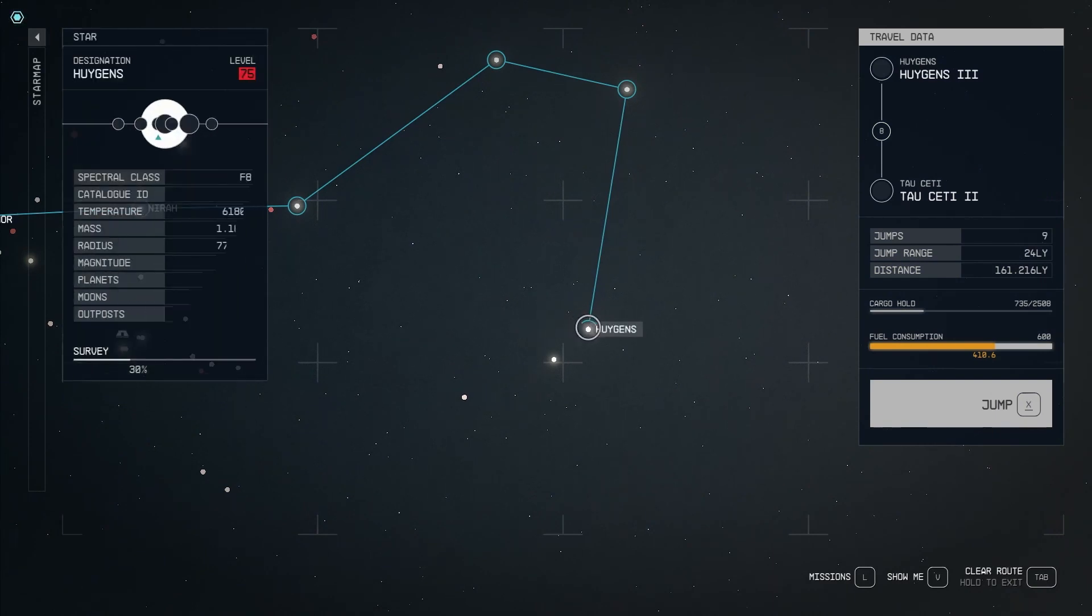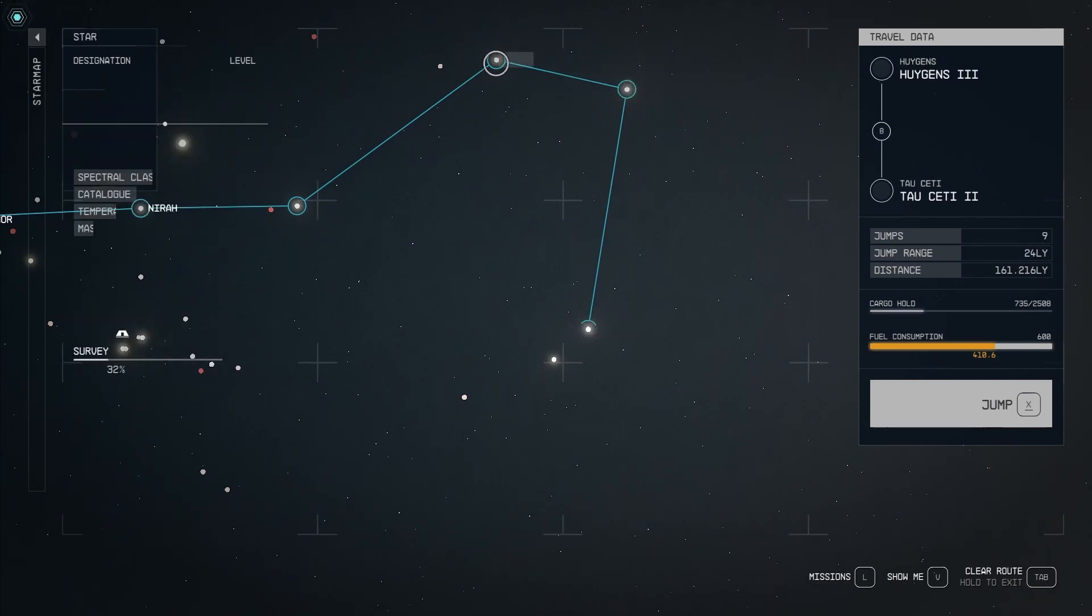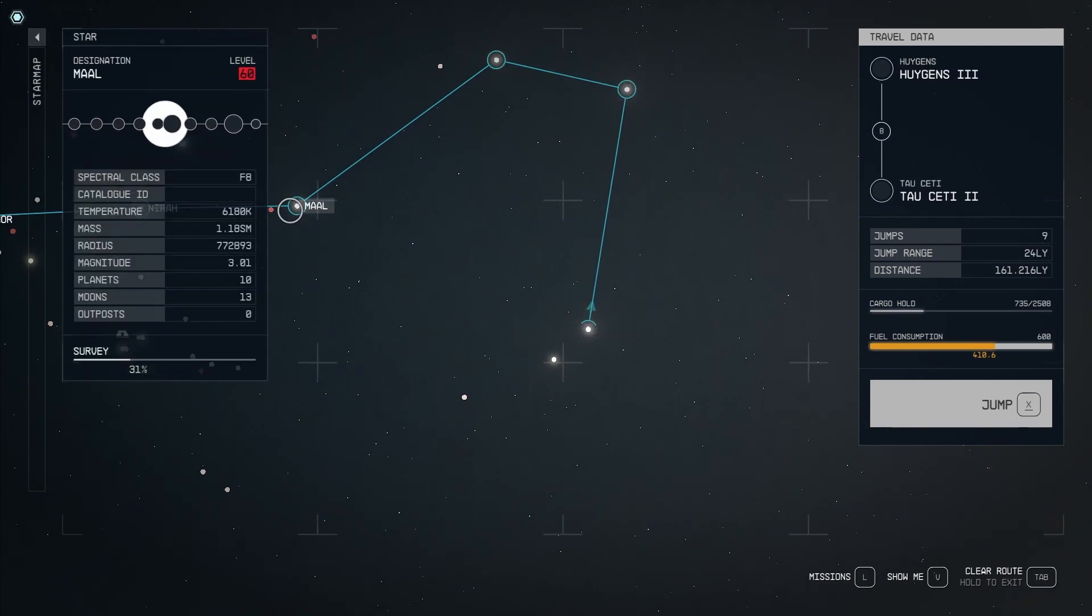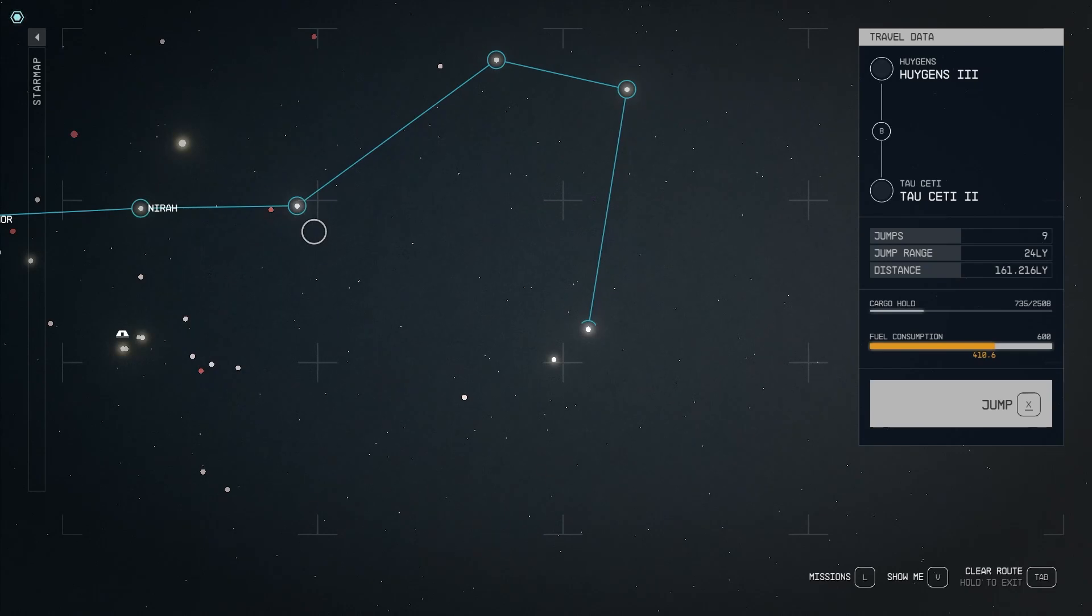For example, right now I have to go from Higgins to Boar to Fermi and then to Maul. If I had a stronger grab drive than 24 light years, I'd be able to go directly to Maul, but this trip is now significantly longer because of the strength of my grab drive.